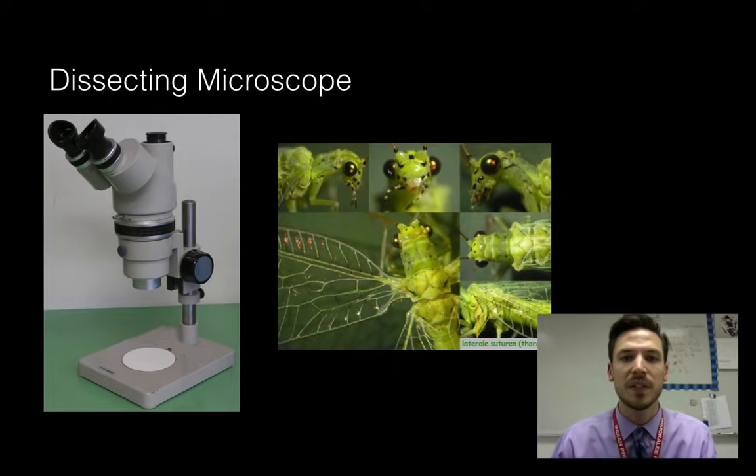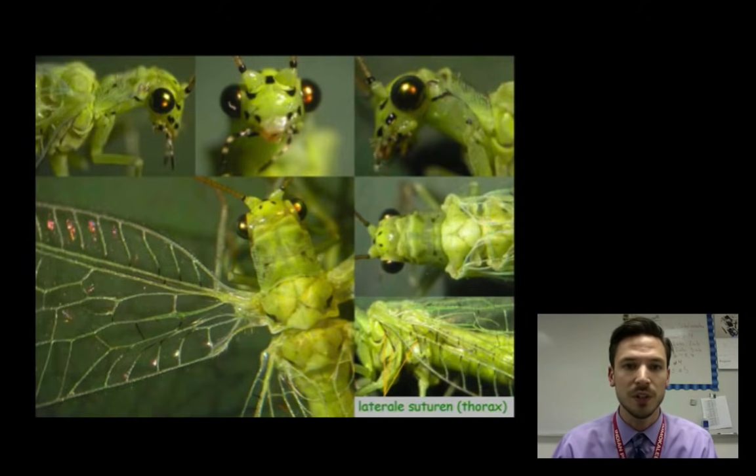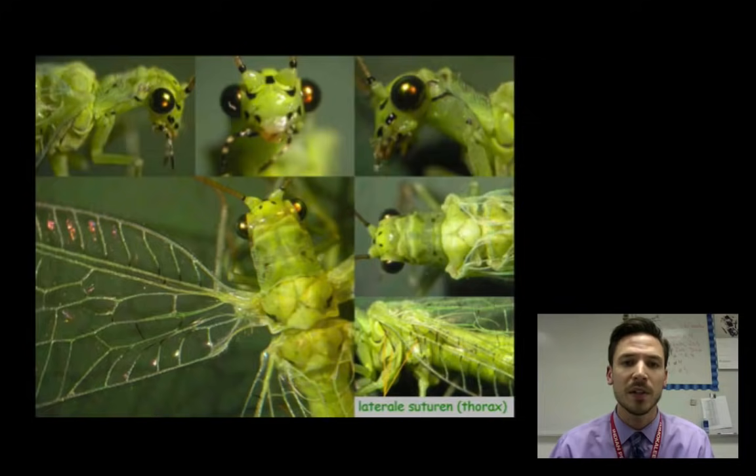So here's an image that was taken with a dissecting microscope. Here's an insect up close. And you just notice how high detail, it's in color. I can really see in three dimensions, so I get all the depth and detail to it. And that's really what dissecting microscope is going to be great for, is getting that three dimensional look up close at specimens.